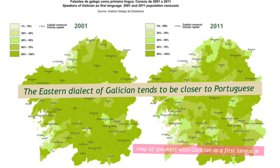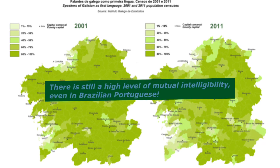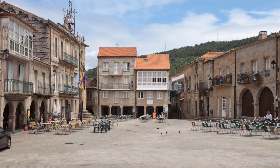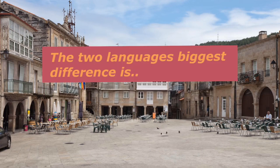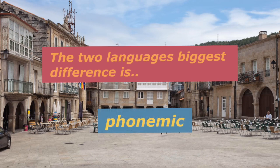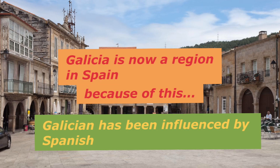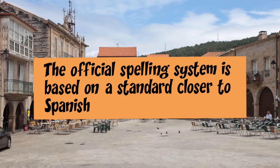The Eastern dialect of Galician tends to be the closest one to Portuguese. The two languages still maintain a high level of mutual intelligibility — even a Brazilian Portuguese speaker could converse with a Galician speaker to a large extent. The biggest difference between the two languages is mainly phonemic, in that Galician, being a part of modern Spain, has naturally been influenced by Castilian Spanish, and the main spelling system is based more on Spanish than Portuguese.